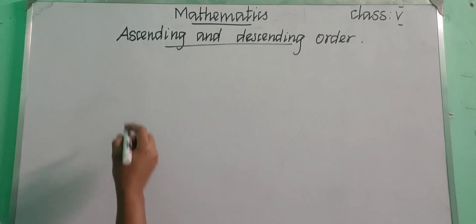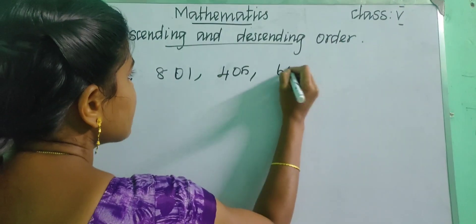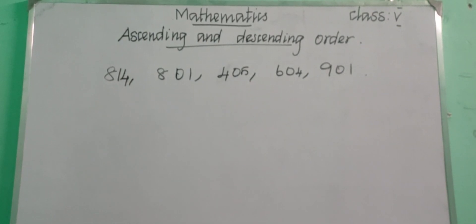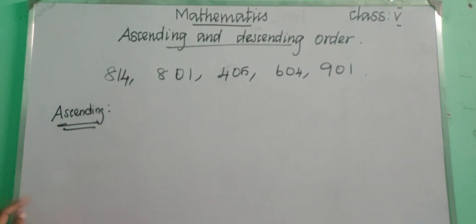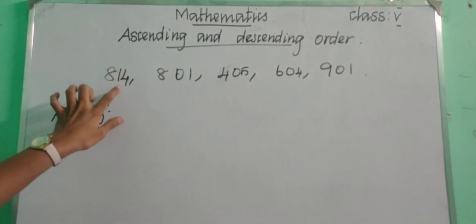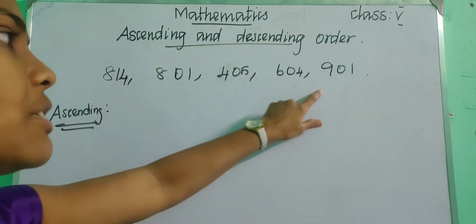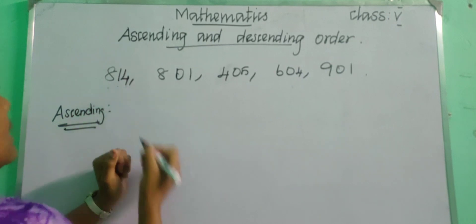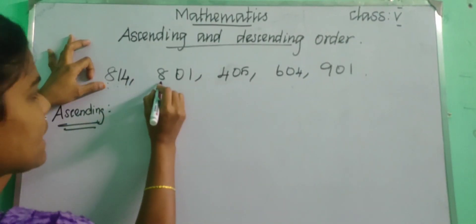Let us learn with an example. If you are having the numbers 814, 808, 405, 604, and 901 — how will you arrange these in ascending order? All these numbers are 3-digit numbers. The place values are 1s, 10s, 100s. First we check the 100s place. In 100s place we are having: 8, 8, 4, 6, and 9.